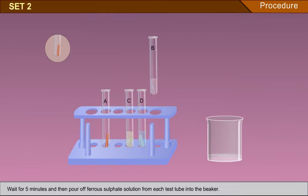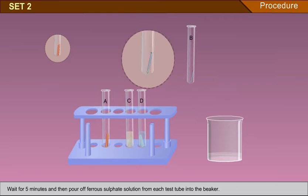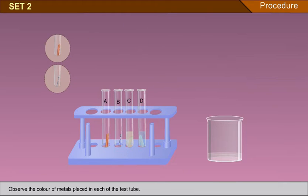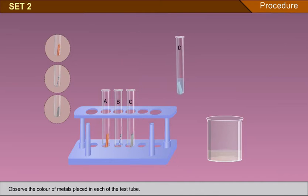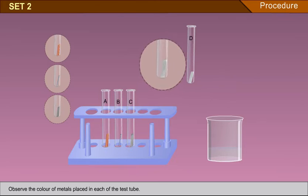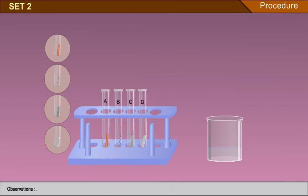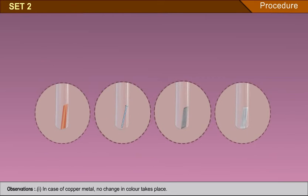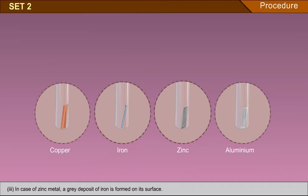Observe the colour of metals placed in each test tube. Observations: 1. In case of copper metal, no change in colour takes place. 2. In case of iron metal, no change in colour takes place. 3. In case of zinc metal, a grey deposit of iron is formed on its surface. 4. In case of aluminium metal, a grey deposit of iron is formed on its surface.